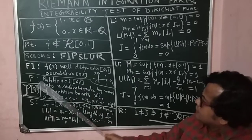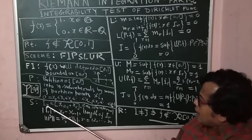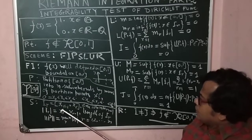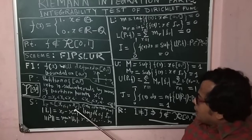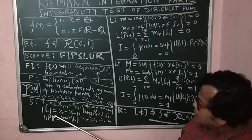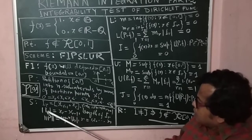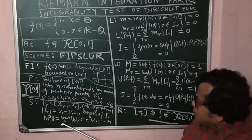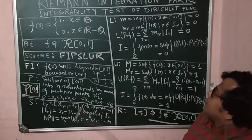S refers to sub-interval. The r-th sub-interval is I_r = [x_{r-1}, x_r]. Its magnitude is denoted by |I_r| = x_r - x_{r-1}, and the norm of the partition P is defined as the maximum |I_r| for r = 1 to n.